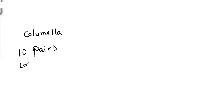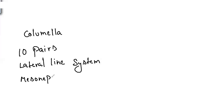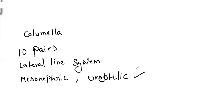External ears are absent, but only one ear ossicle is present in the middle ear, called the columella. Cranial nerves are 10 pairs. The lateral line system is present in the larva (tadpole larva). Kidneys are mesonephric. The animals are ureotelic — they excrete urea — but the tadpole larva and salamanders are ammonotelic, excreting ammonia.